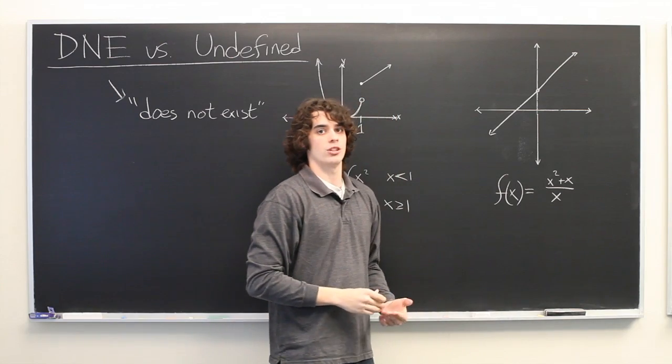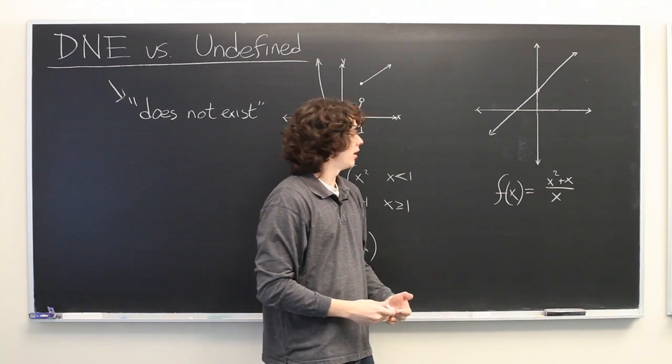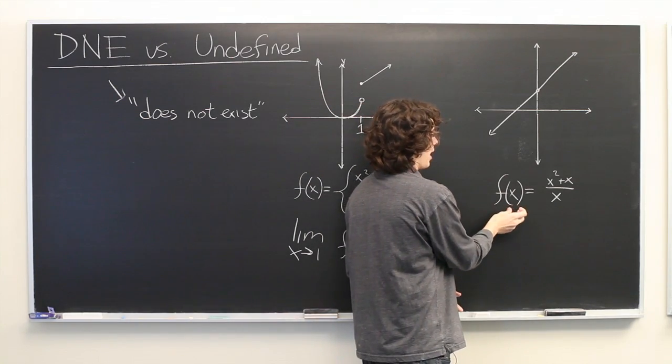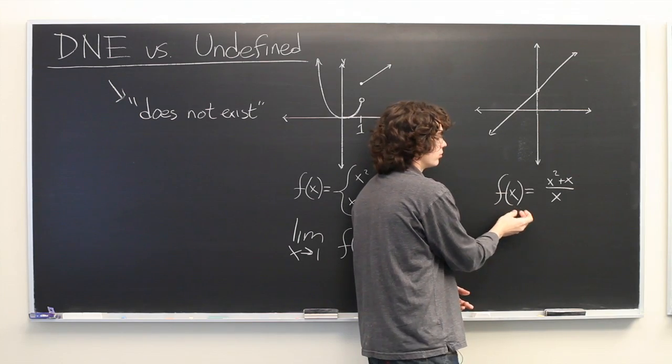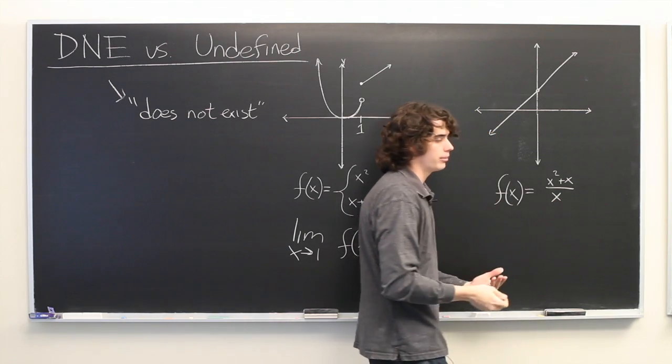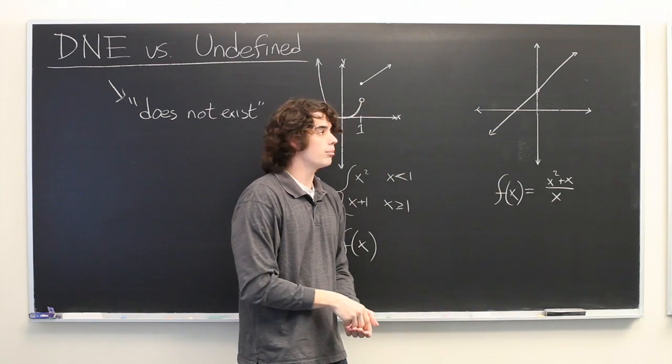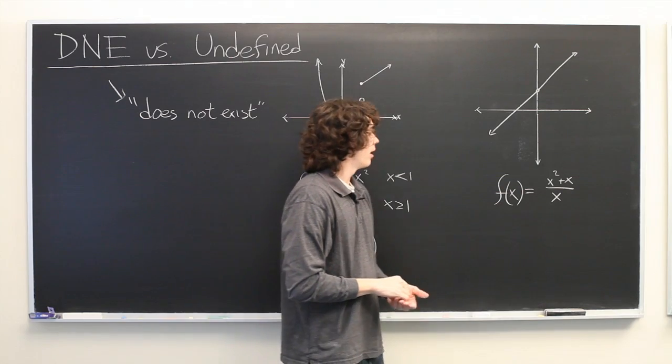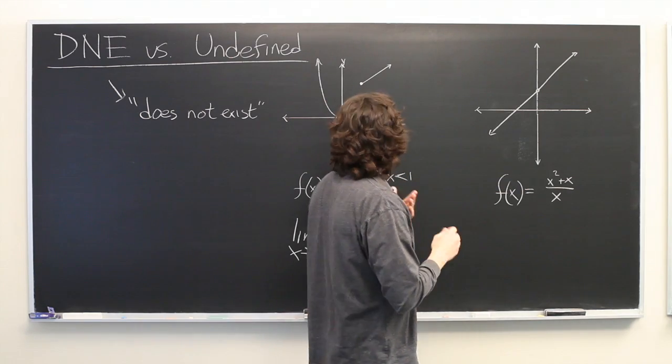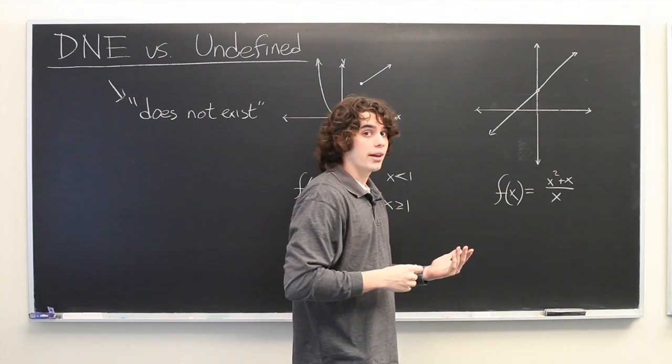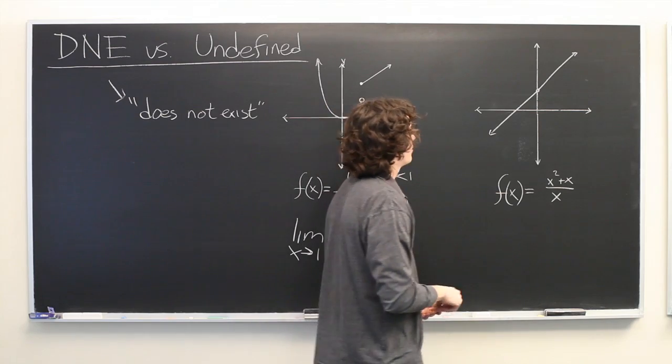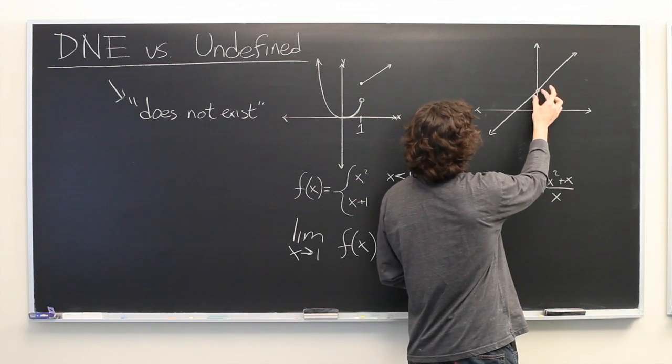At this point, the function is said to be undefined because if we plug in f of 0, we get a 0 in the denominator and we cannot divide by 0 because that is undefined. However, in this case, undefined does not imply that the limit does not exist. It is, in fact, quite simple to compute this limit.